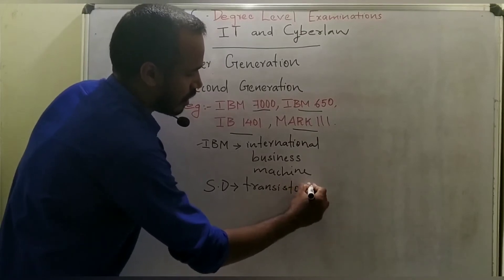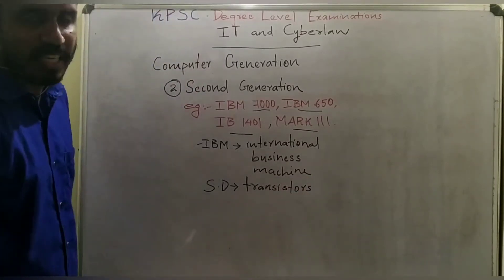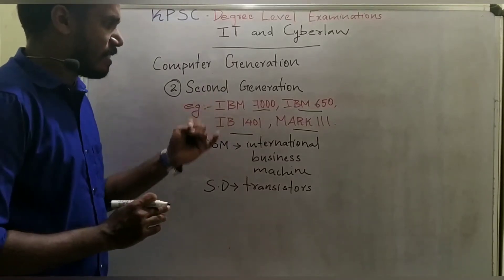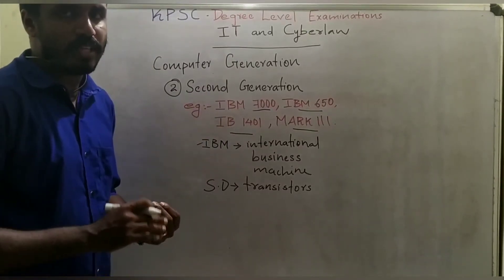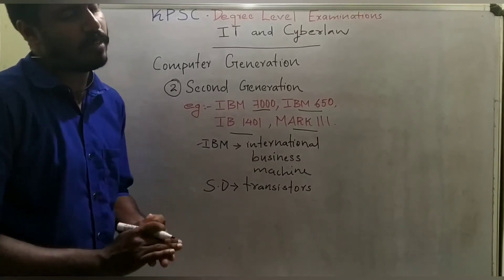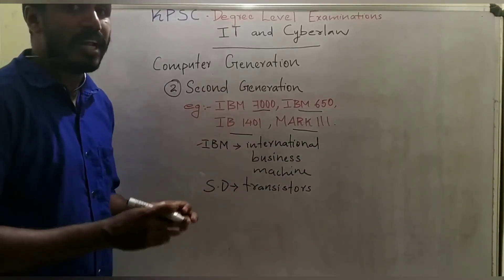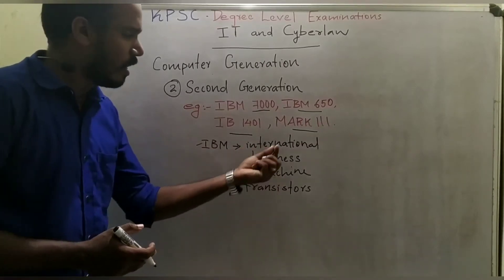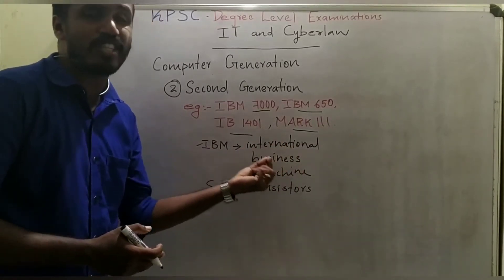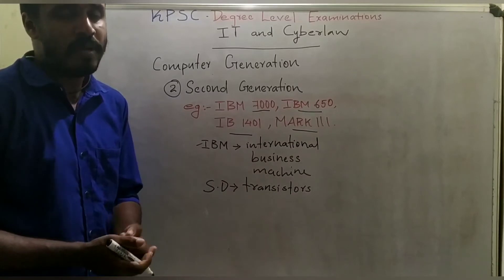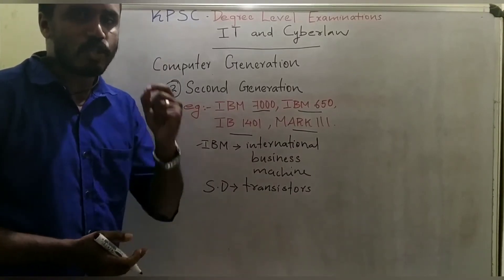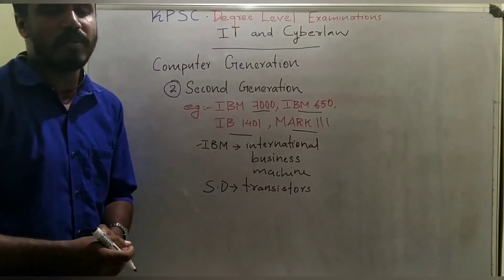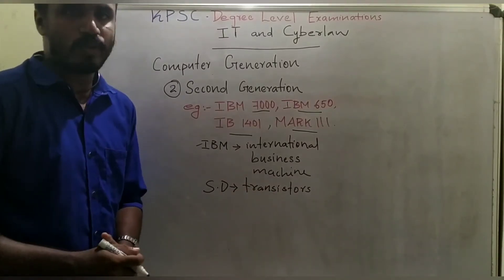In the second generation of computers, transistors are used as the switching device. Examples of second generation computers include IBM 7000, IBM 650, IBM 1401, and Mark 3.